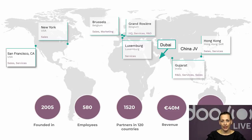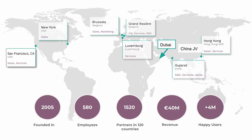UDU is a Belgian company with our headquarters in Grand Rozier. We also have our marketing and sales office in Brussels. As you can see on the map, we have offices around the world - in the United States, Luxembourg, China, India - and we recently opened a new office in Dubai. The company was founded in 2005, and today we have more than 4 million users all over the world. We are growing fast in revenue, employees, and our partner network.